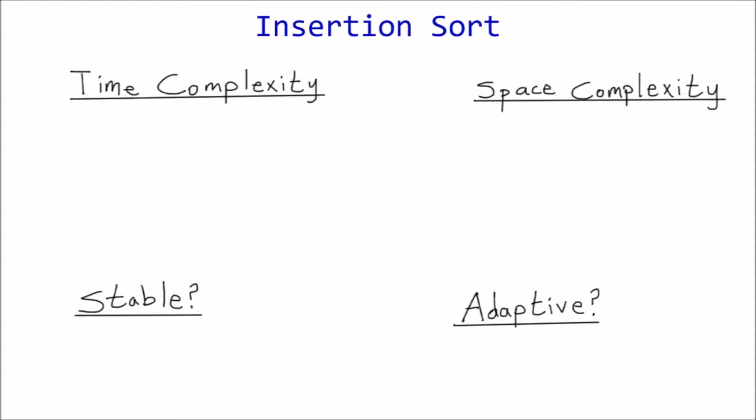Space complexity describes the amount of additional space needed relative to input size n. Like selection and bubble sort, insertion sort doesn't require any extra space, classifying it as an in-place sorting algorithm. Therefore, this algorithm requires a constant amount of additional space, or big O of 1.